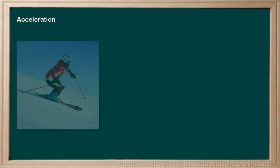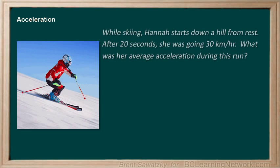So, let's do an acceleration example. While skiing, Hannah starts down a hill from rest. After 20 seconds, she's going 30 kilometers per hour. What was her average acceleration during this run? First, let's get some things we know listed. The initial velocity, she started from rest, so vi would be zero. The final velocity vf is 30 kilometers per hour. We can say that delta t, the change in time, is 20 seconds. Now, we could just jump into the equation, but first, let's take a quick look at the units.